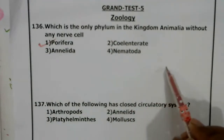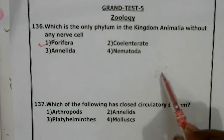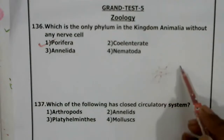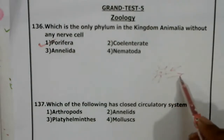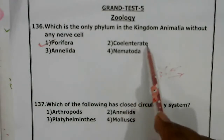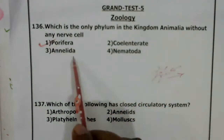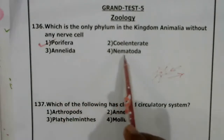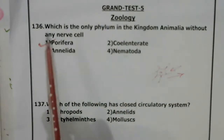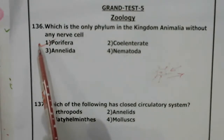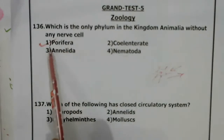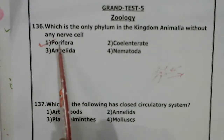The nerve cells in coelenterates are not like those in higher animals. The nerve fibers that arise from the nerve cells act both as dendrites as well as axons, so the impulse passes in both directions. Annelids have a good nervous system, and nematodes also have a nervous system. But where nerve cells themselves are absent is Porifera — Porifera will not have any nervous sensation.